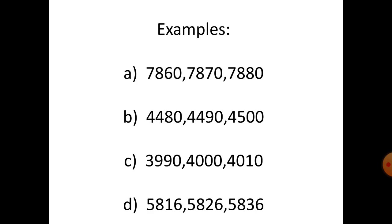Then add ten again — seven thousand eight hundred and eighty. Example B: four thousand four hundred and eighty, four thousand four hundred and ninety, and four thousand five hundred. You just add ten each time. Example C: three thousand nine hundred and ninety, plus ten.